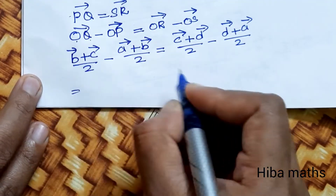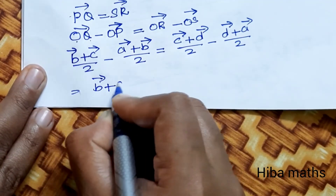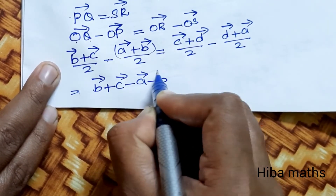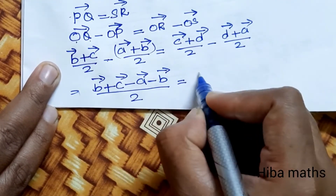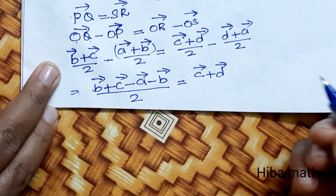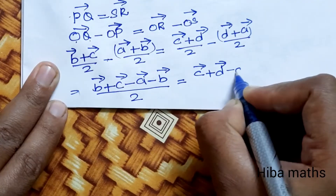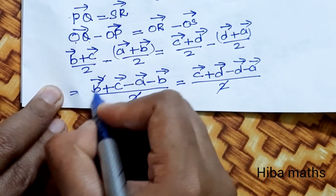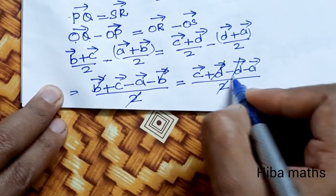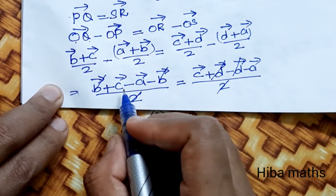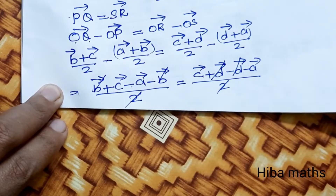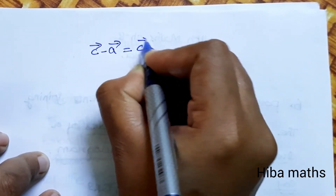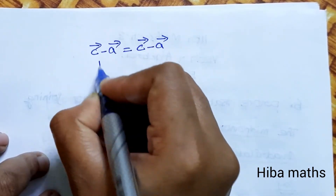Simplifying: (b vector + c vector - a vector - b vector) / 2 = (c vector + d vector - d vector - a vector) / 2. The b terms cancel on the left and d terms cancel on the right, giving (c vector - a vector) / 2 = (c vector - a vector) / 2. Both sides are equal, so PQ is equal to SR. First condition is proved.